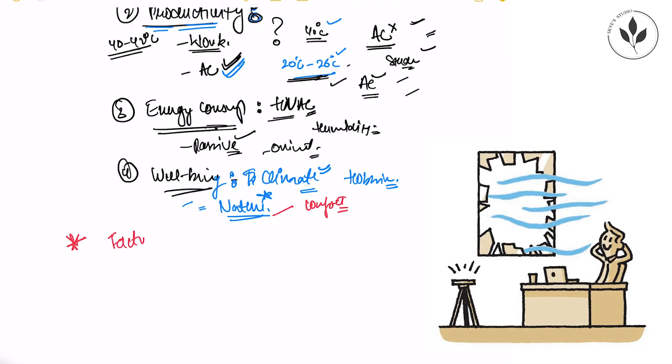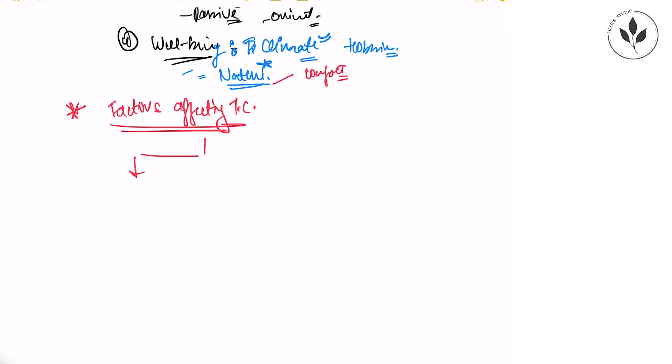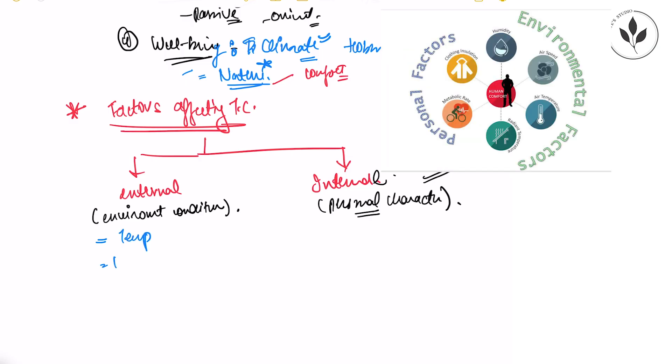Now the next topic is the factors that affect thermal comfort. We have two types of factors. First are your external factors and second are your internal factors. External factors are the ones which are dependent on environmental conditions and internal factors, they are the personal characteristics of human beings that lead to thermal comfort. The metabolism of humans or psychology of humans. The internal factors include the personal characteristics and the environmental conditions include all the factors of climate that we studied earlier. For example, temperature, humidity, air velocity and internal factors include our clothing insulations, metabolic rate of human beings, metabolism of human beings.